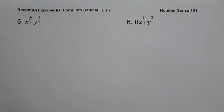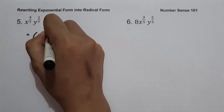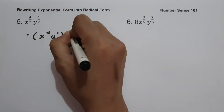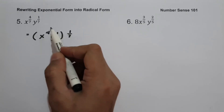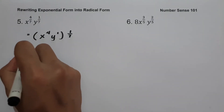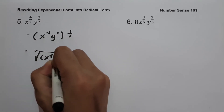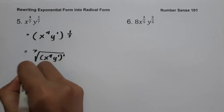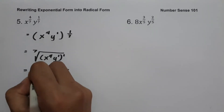On example number five: x raised to 4 over 7, y raised to 1 over 7. Since the exponents of x and y have the same denominator, we can write this as quantity x raised to 4, y raised to 1, all raised to 1 over 7. Because multiplying 1 over 7 by 4 and by 1 gives 4 over 7 and 1 over 7. To write this in radical form, we have the 7th root of quantity x raised to 4, y raised to 1. And to simplify, that is the 7th root of x raised to 4, y. And this will be our answer.